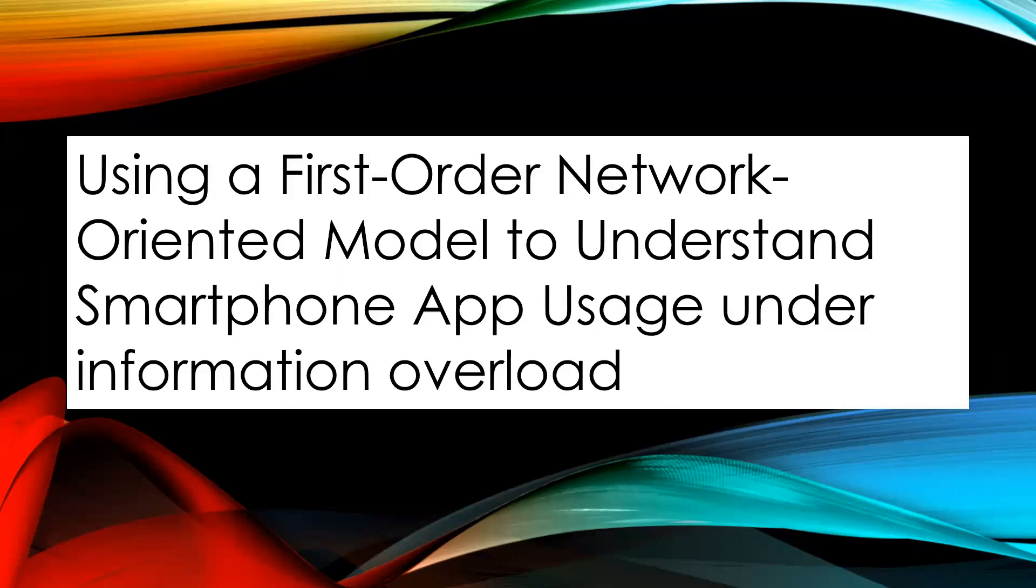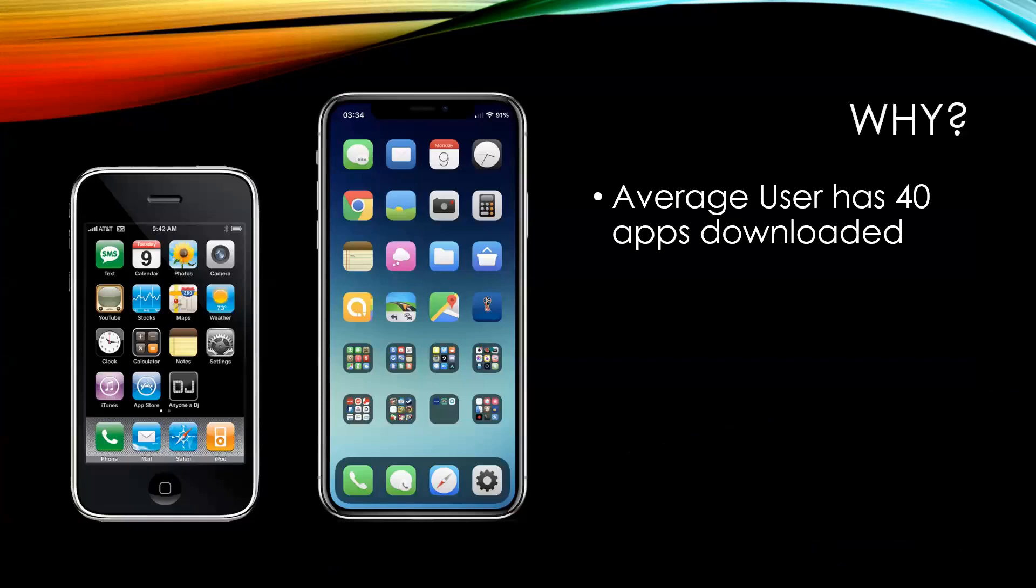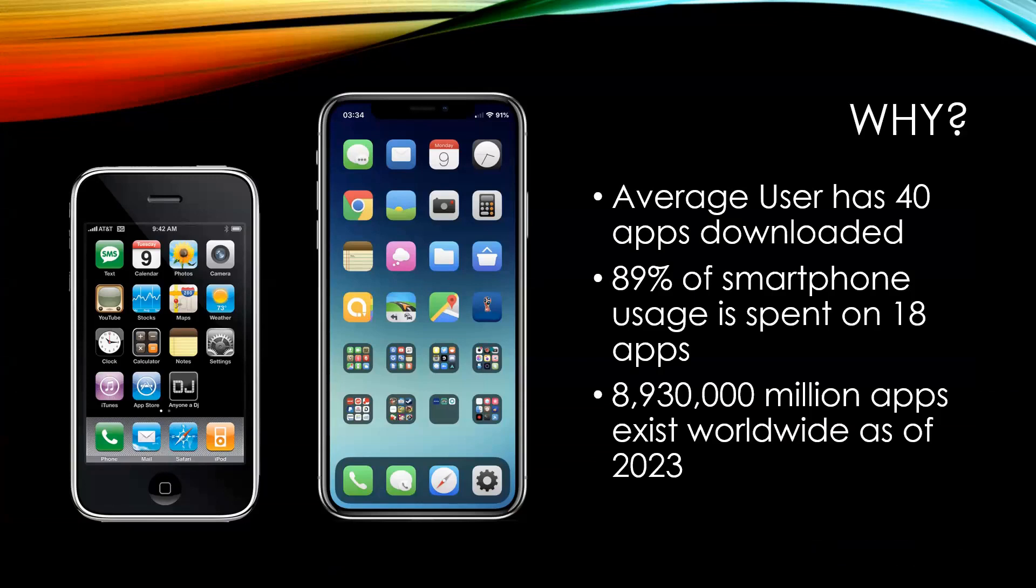We created a first-order network model to model smartphone app usage. The average user has downloaded about 40 apps on their phone but only uses 18 of those apps. Clearly there's a discrepancy here, and with 9 million apps worldwide, there has to be some factor driving this lack of smartphone app usage.